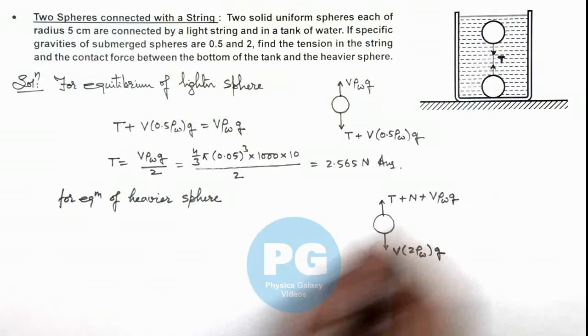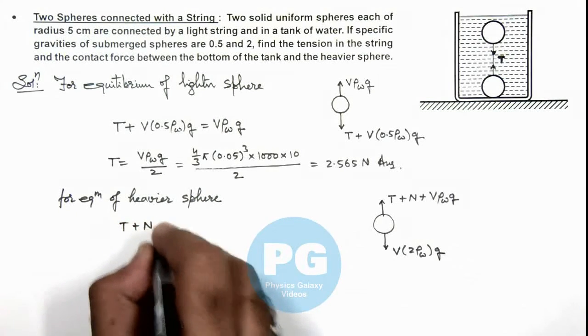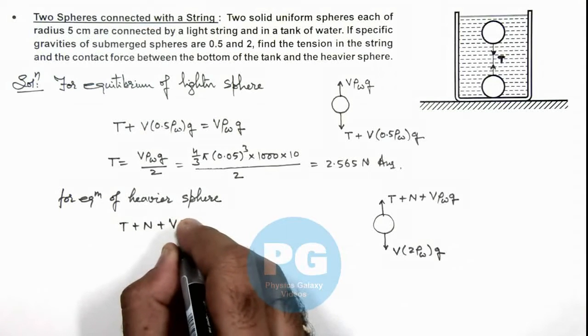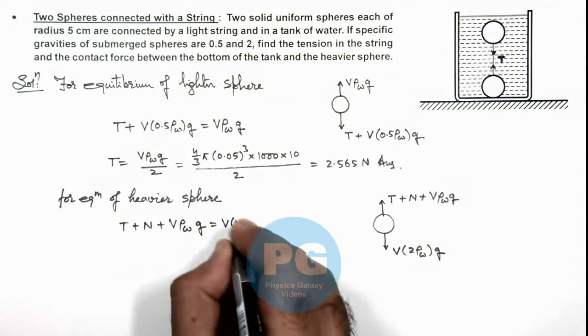Now for balancing the forces on it we can write T + N + V ρ water g should be equal to V times 2 ρ water g.